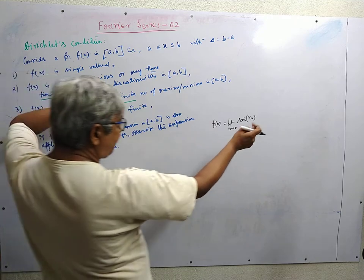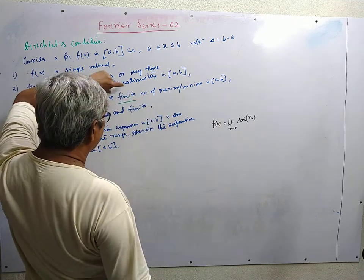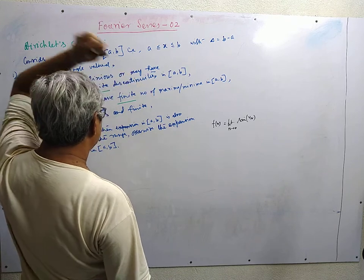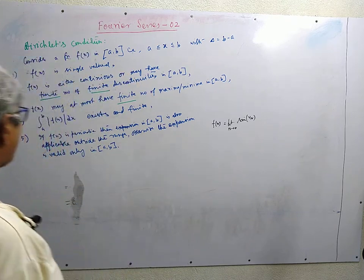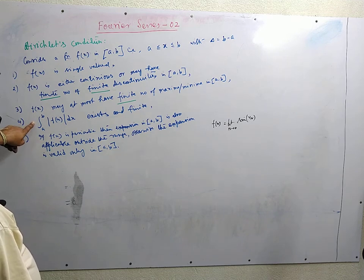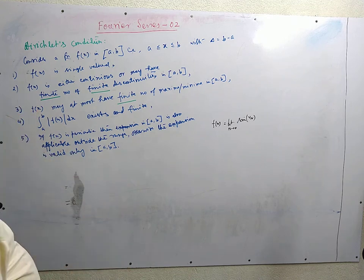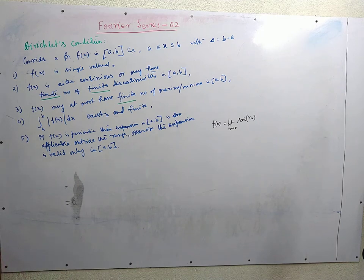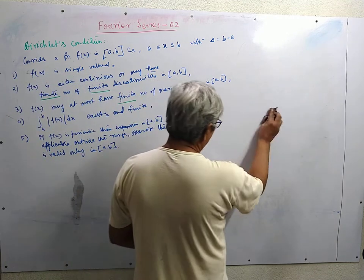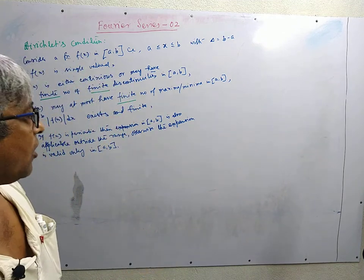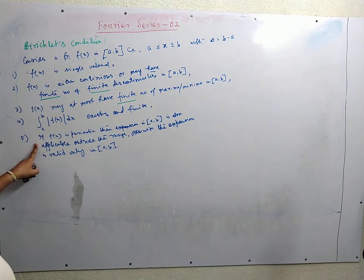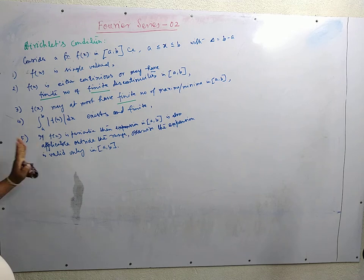This function does not have a finite number of maxima and minima. The fourth point is that the integral of the absolute value of the function in the interval must exist and be finite. Regarding periodicity: periodicity is not at all a necessary condition for the expansion of the function in Fourier series. But in almost all textbooks this point is written, and if you do not write it in examination, marks may be deducted.